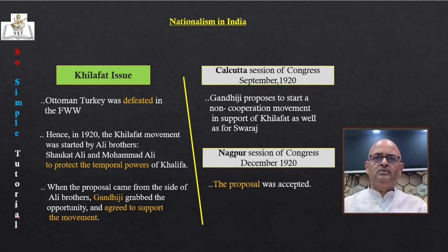To pacify the people, Lord Irwin, the Viceroy, announced a vague offer of dominion status for India in October 1929 but did not specify the time. He also offered to hold a Round Table Conference to discuss the future constitution, but this did not satisfy Congress leaders.